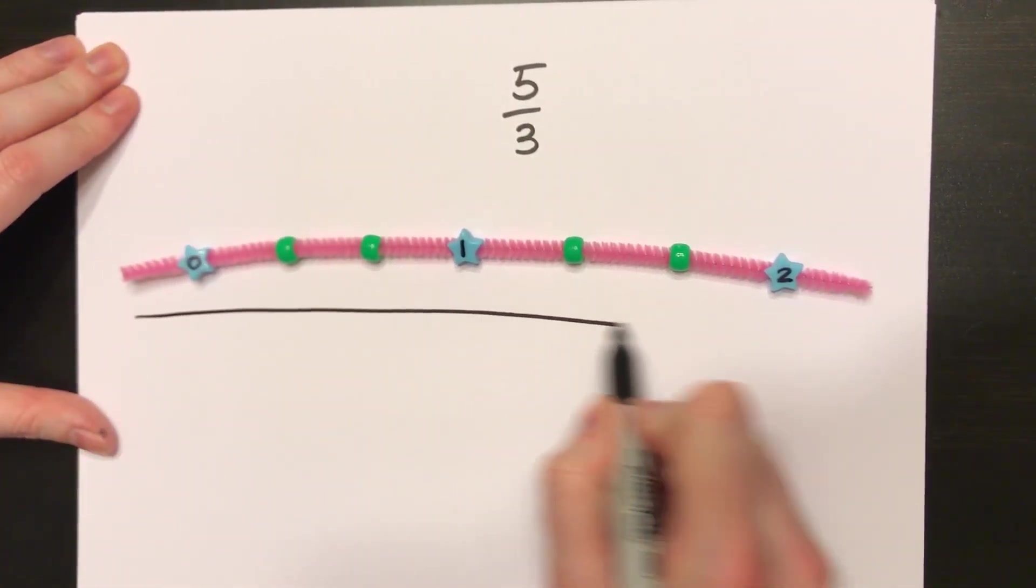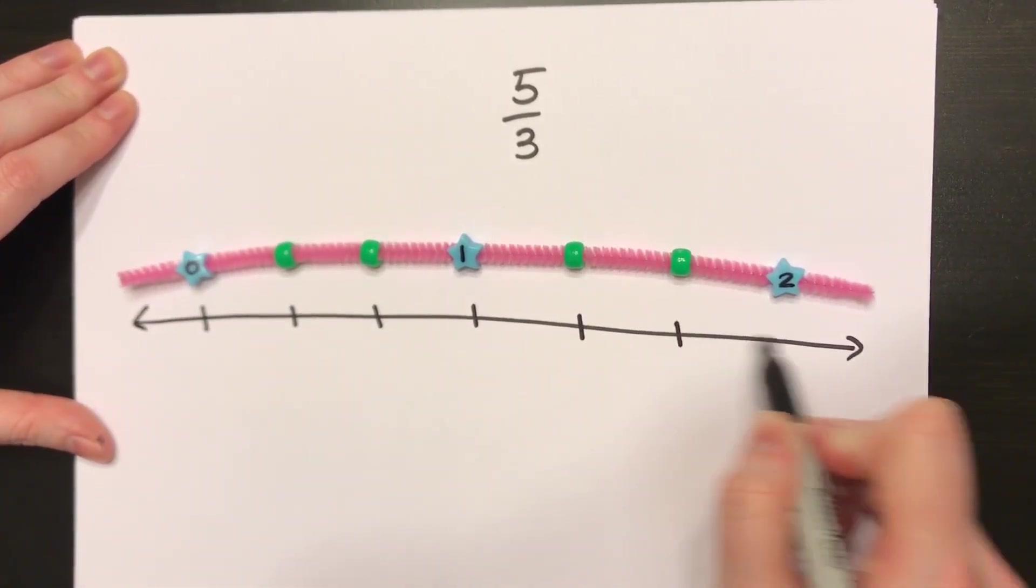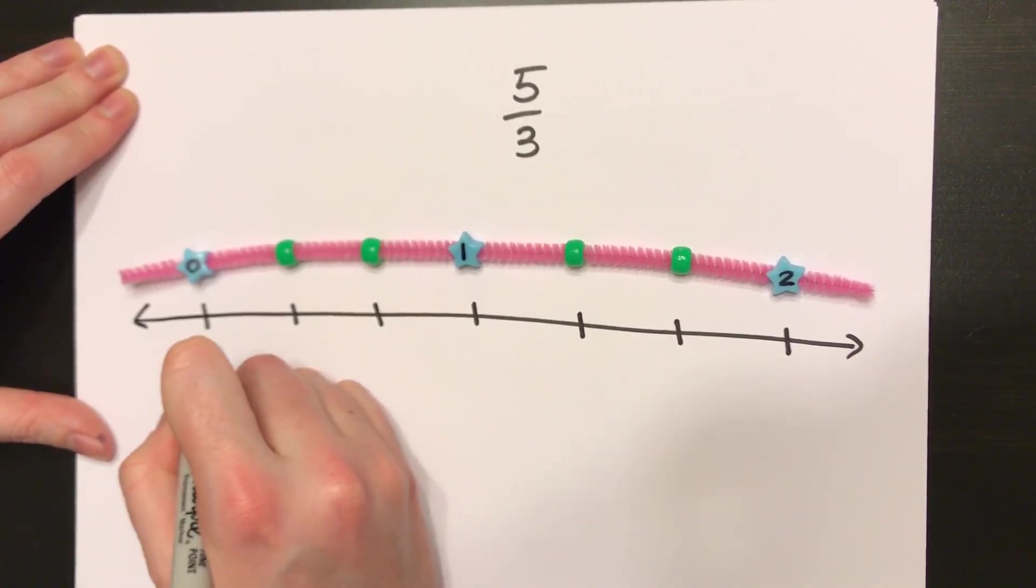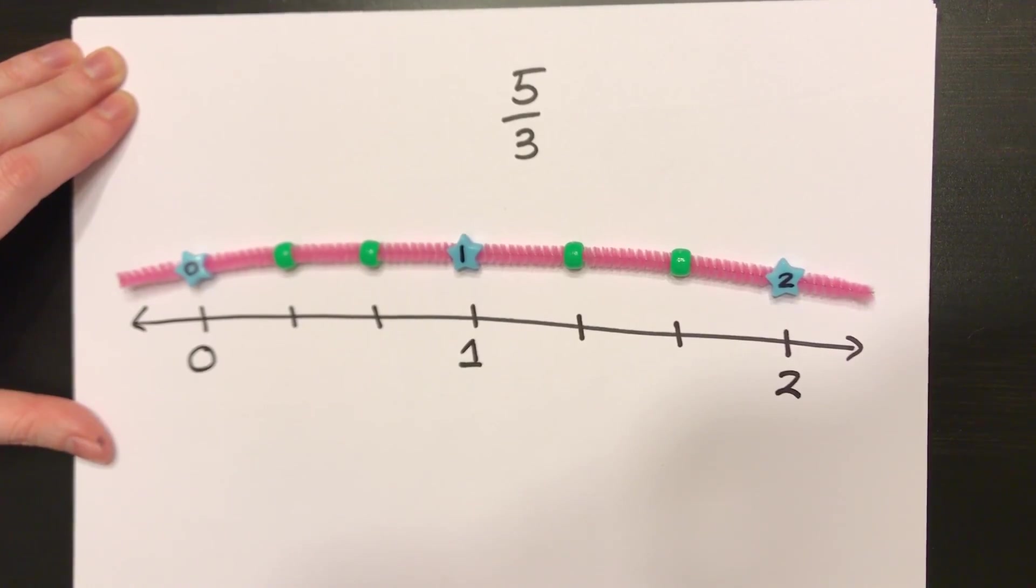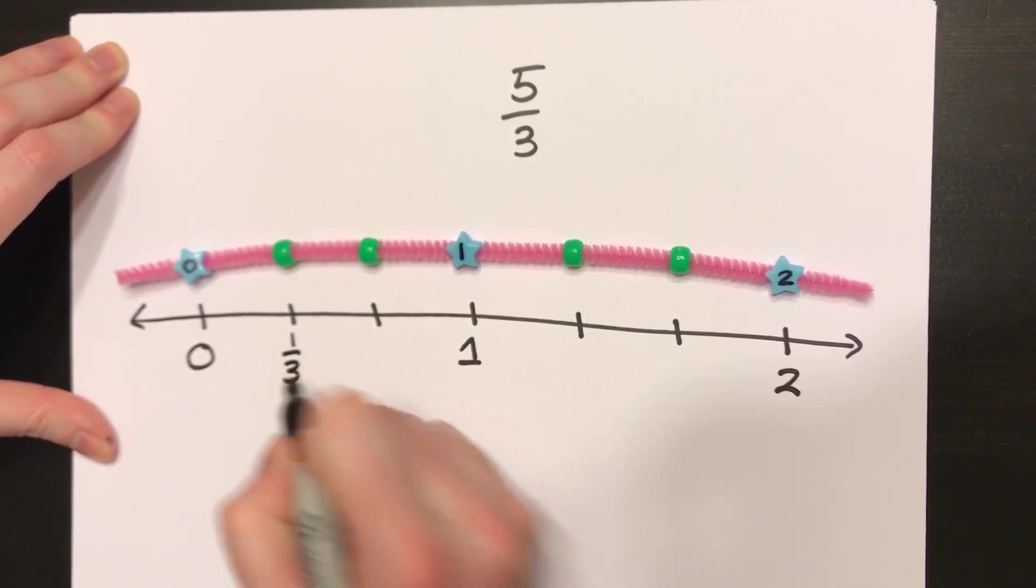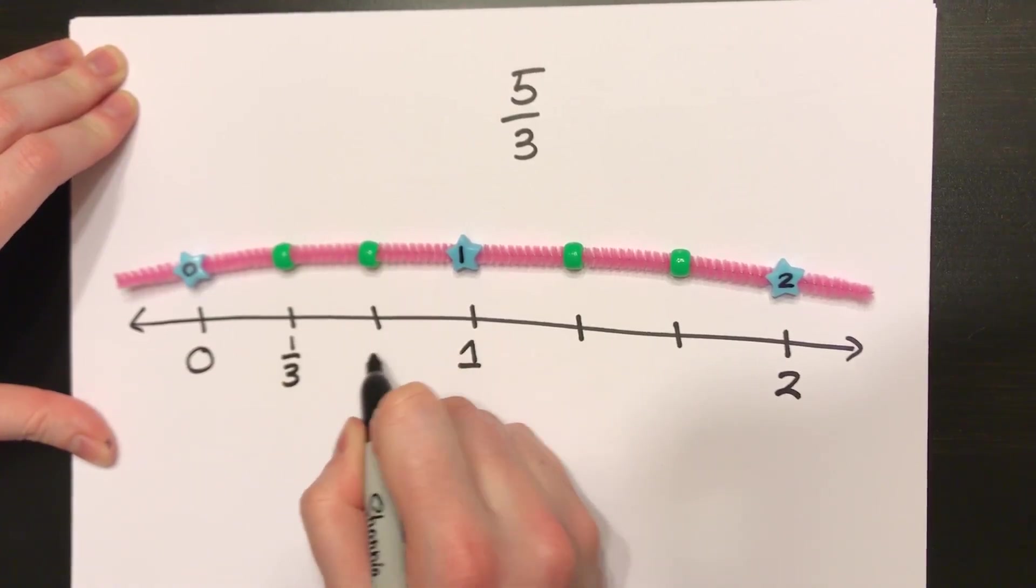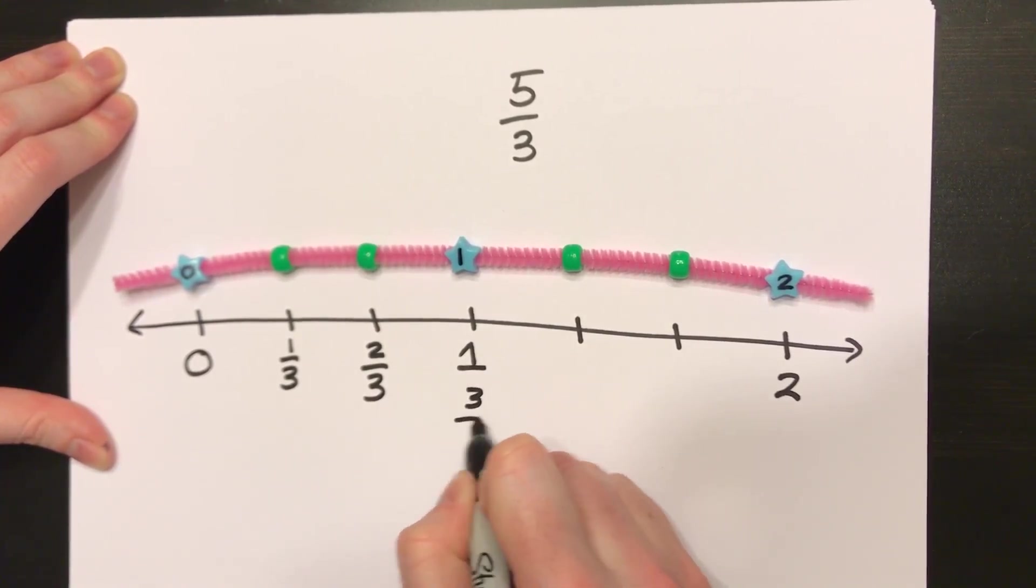Trace it on the number line. Place my tick marks. Write my whole numbers, 1 and 2. Now I can start counting by thirds. The first tick mark would be 1 third. After the second tick mark, it would be 2 thirds. At 1, I can also count this as 3 thirds.